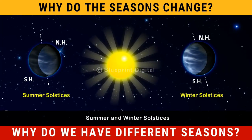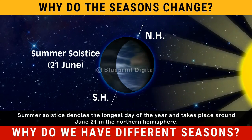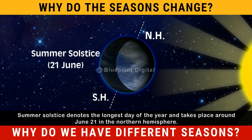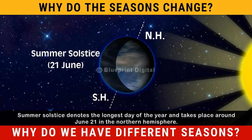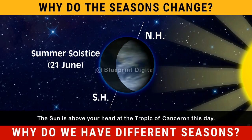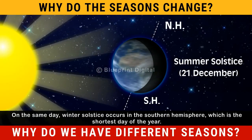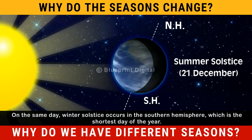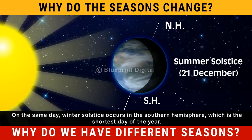Summer solstice denotes the longest day of the year and takes place around June 21 in the Northern Hemisphere. The Sun is above your head at the Tropic of Cancer on this day. On the same day, Winter solstice occurs in the Southern Hemisphere, which is the shortest day of the year.